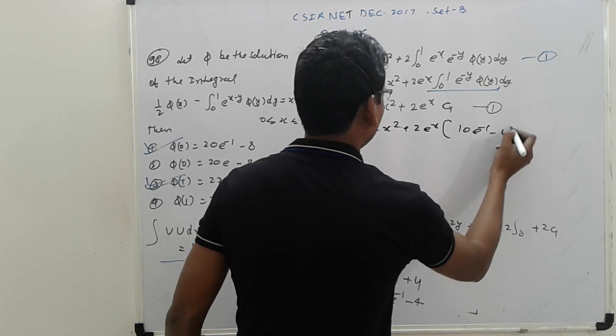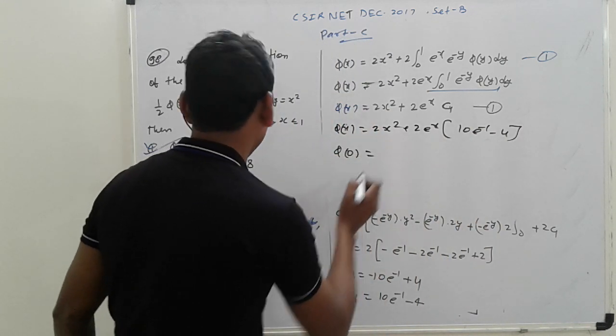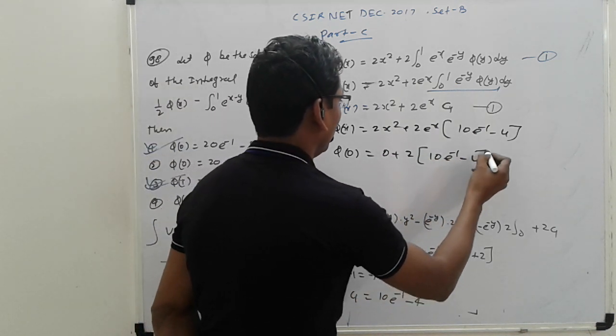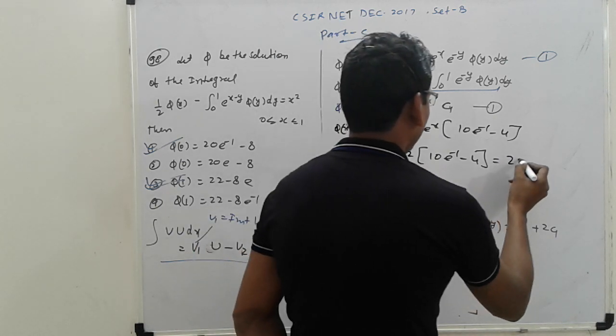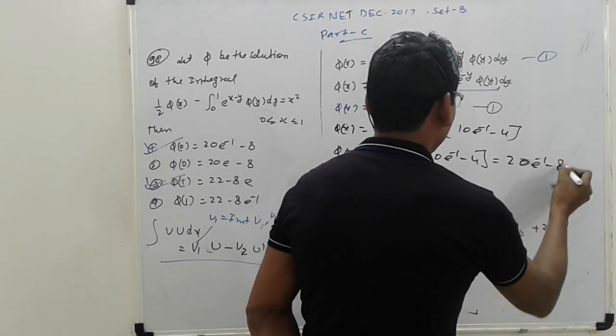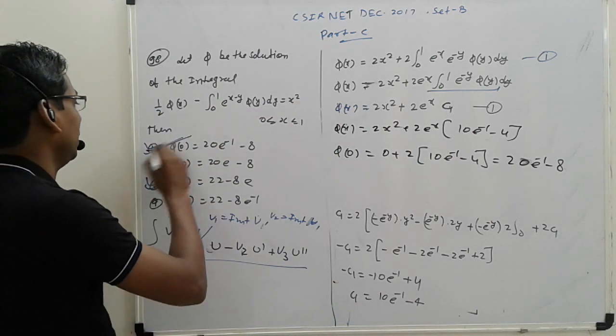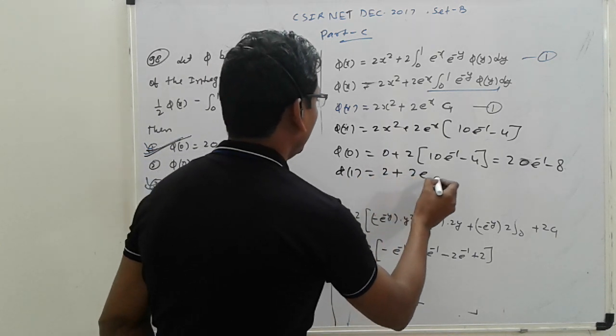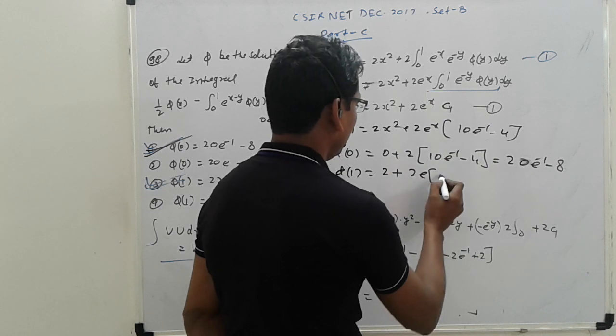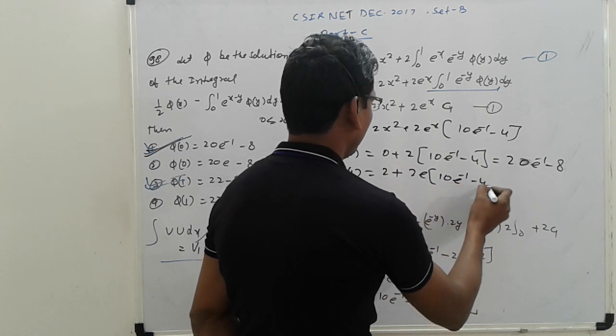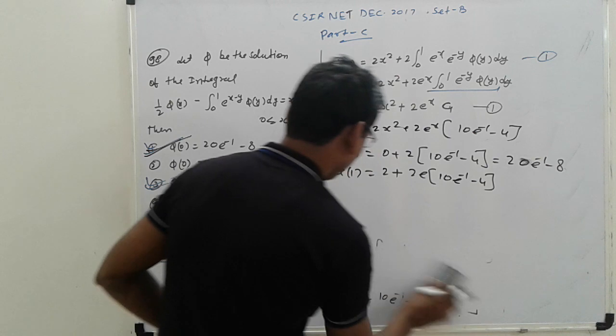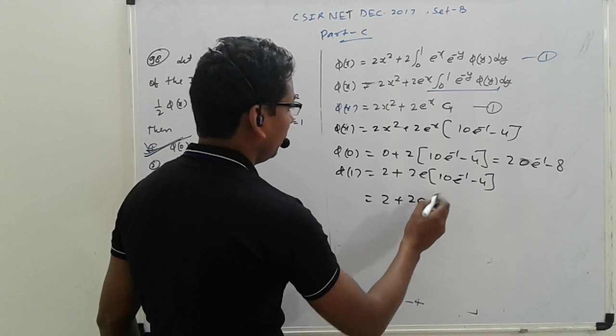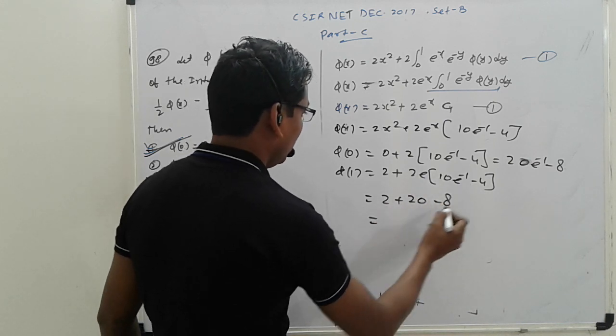So 20 e minus 1 minus 4, so that is 0 plus 2, 10 e minus 1 minus 4, so 20 e minus 1 minus 8. That is the correct 5 of 1. 2 plus 2 e here, and this is 10 e minus 1 minus 4. Simplify. So this is 2 plus 2, 20, multiply this here and minus 8 e.